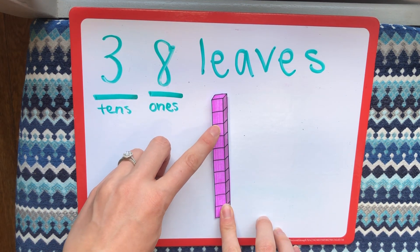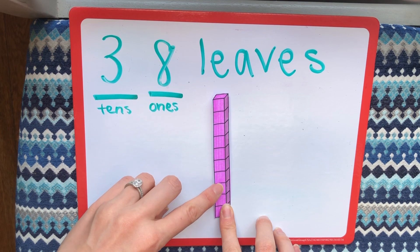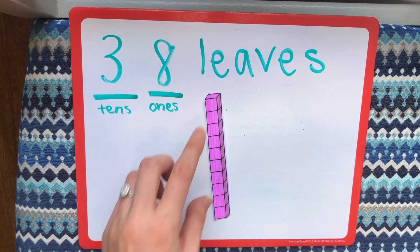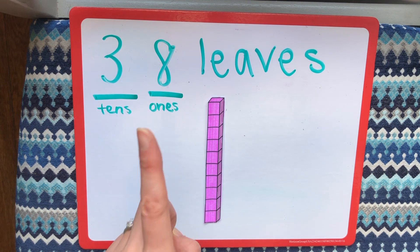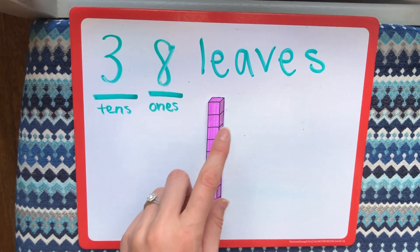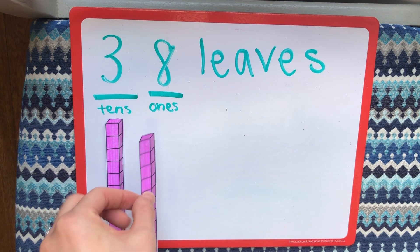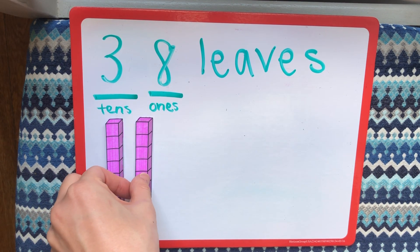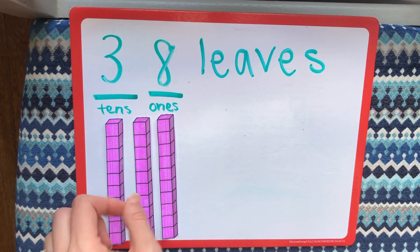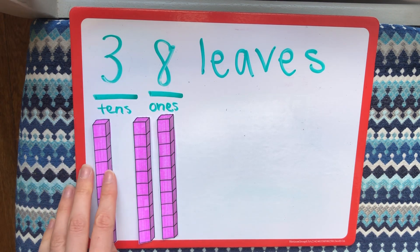Counting the units on a long: 1, 2, 3, 4, 5, 6, 7, 8, 9, 10. So 1 long is 1 group of 10. I need 3 of them: 10, 20, 30. I have 3 longs — 3 groups of 10.